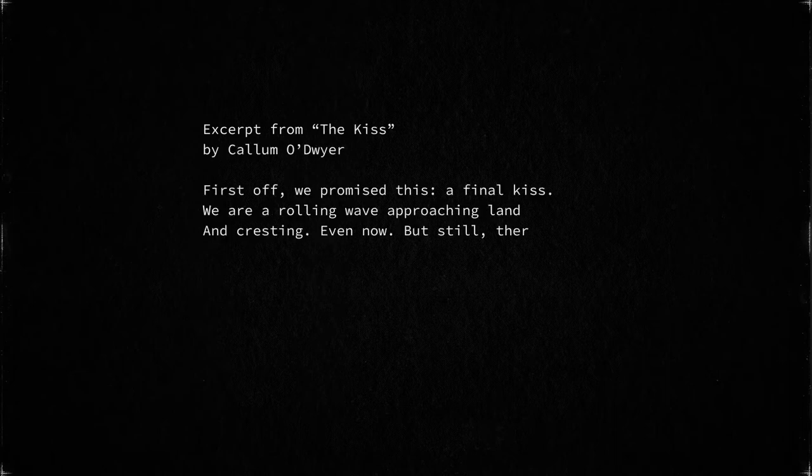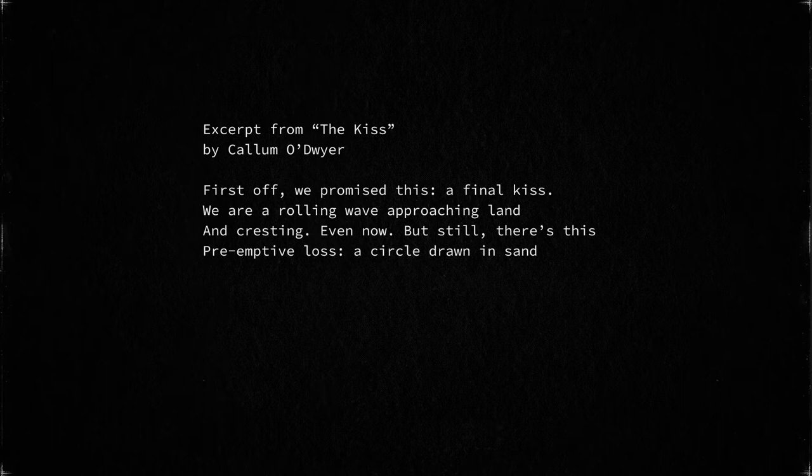You might be thinking of a single line of poetry as a single sentence or a single phrase, and often that is the case. These kinds of lines, which complete a single thought and often have a period or some other punctuation at the end of them, are called end-stopped lines because you stop, you pause at the end of them. Our example poem, The Kiss, by Callum O'Dwyer, begins with an end-stopped line: 'First off, we promised this, a final kiss.' It's a full sentence ending in a full stop.